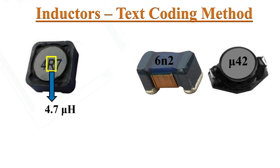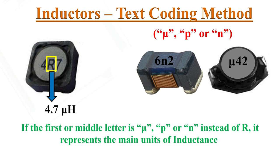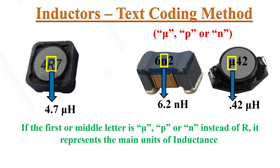Sometimes the letter R is replaced by the letters mu or N. These letters represent the main unit of inductance. For example, 6N2 represents 6.2 nano-Henrys of inductance and mu42 indicates 0.42 micro-Henrys of inductance.